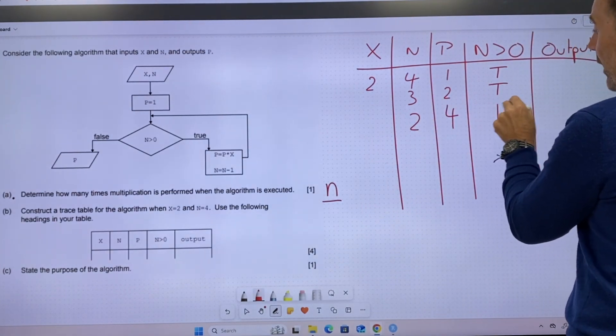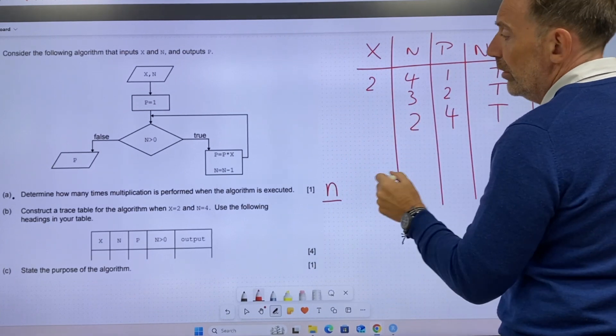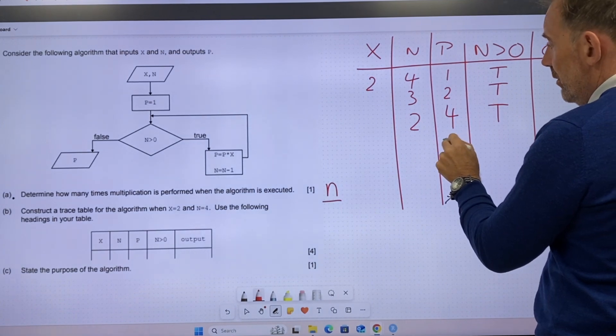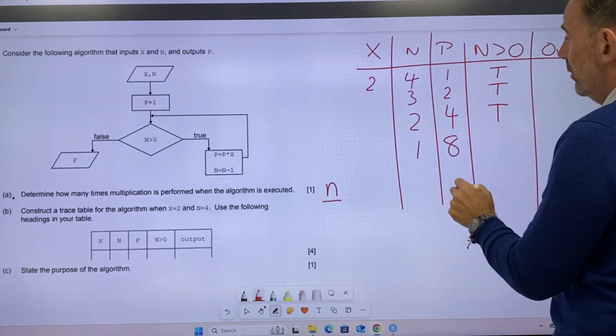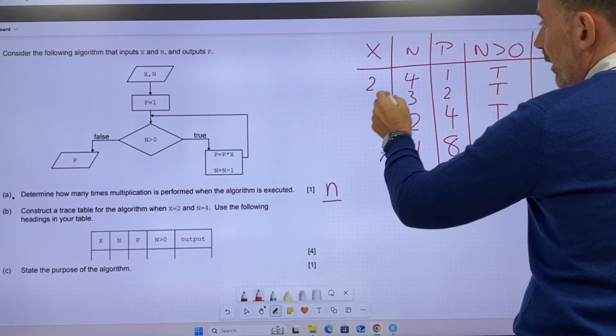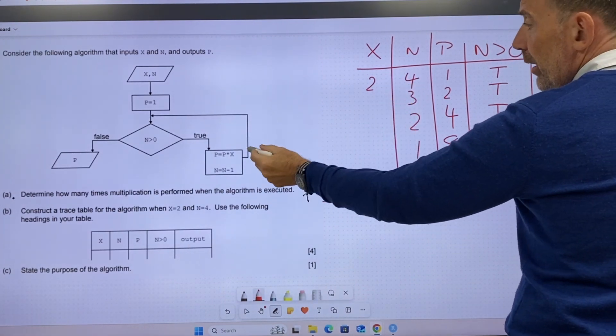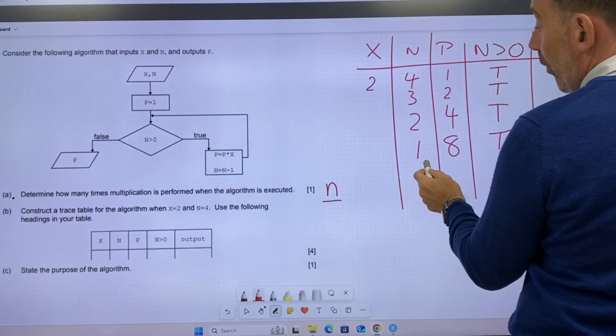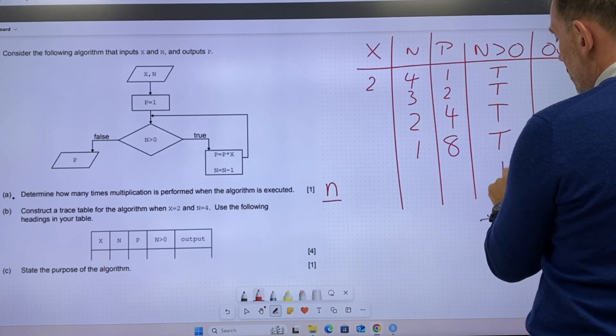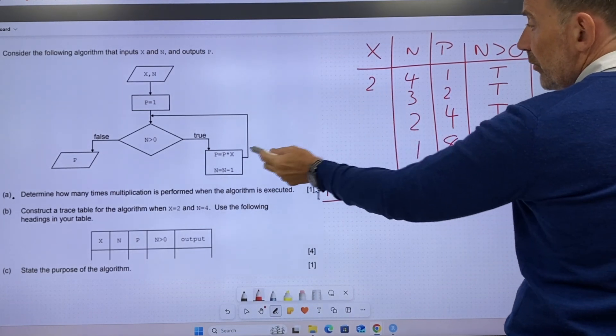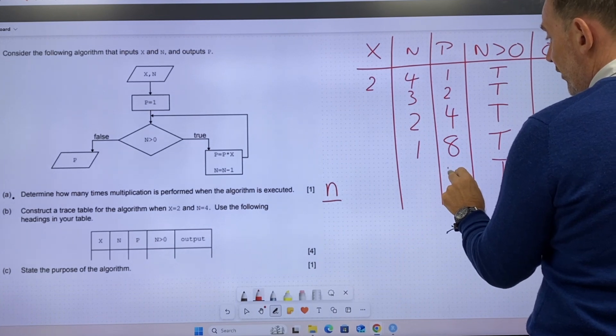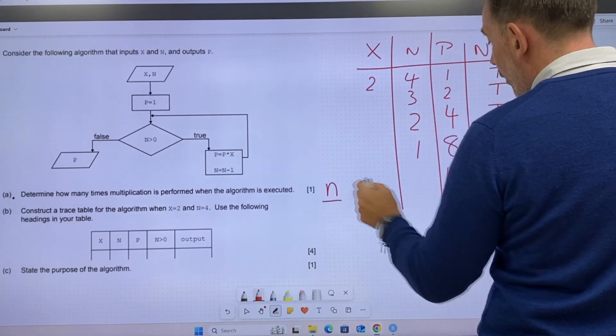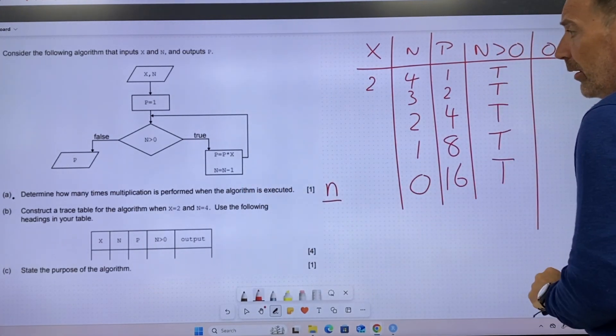Two times two is four. Back around again. Two times four is eight. One. Still true. Back around again. So n is greater than zero. Yes, it is. It's one. So that's true. P equals p times x. Two times eight would be 16. But now n equals n minus one equals zero.